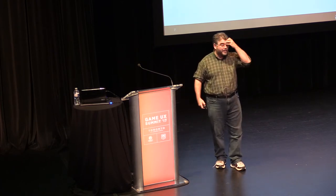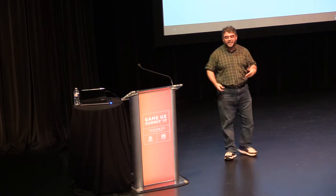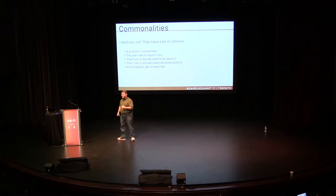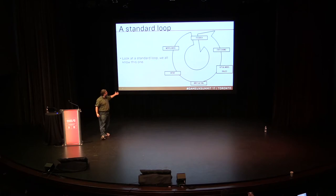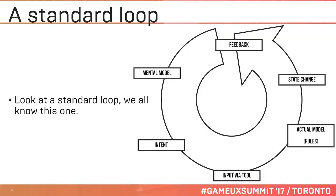Here's a problem. The user has to go: problem — what do I do? I'll push this. Okay, I'm going to push that. It said something — what does that mean? Okay, we're done. That's pretty much all of interactivity design, all of interaction design, certainly all of game design, and also all of narrative design. This is a standard loop. The player has a mental model, they form an intent — either on their own or because a goal is presented to them.